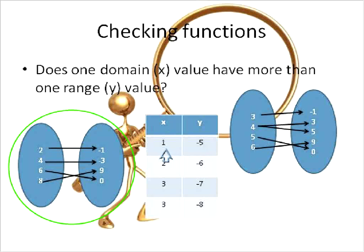Let's go over to our table now. One has a value of negative five. Two has a value of negative six. Three has a value of negative seven. And three also has a value of negative eight. So you see that the domain has, this same domain value has more than one range value. That means that it is not a function. It is a relation, but it is not a function.